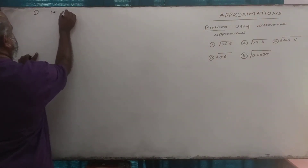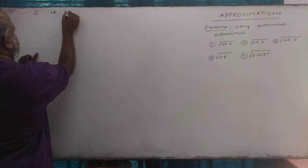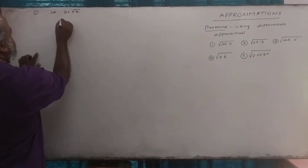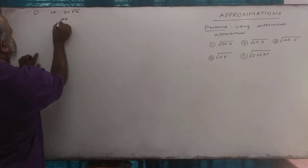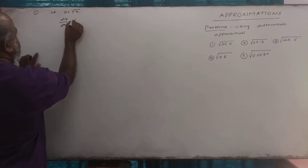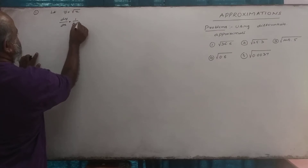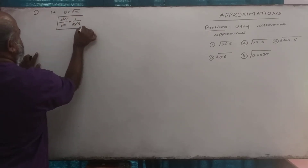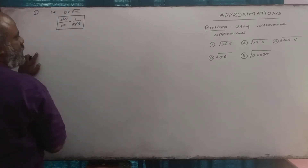Let y be equal to root x. We differentiate to get dy/dx equal to one over two root x. This is what we call the derivative.